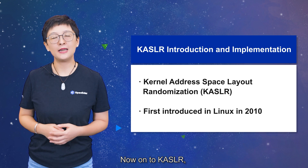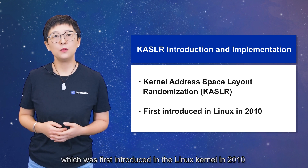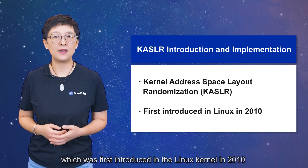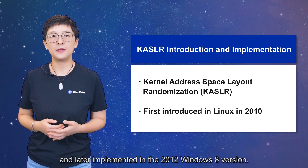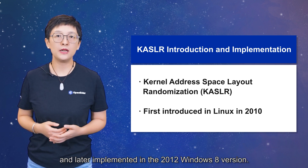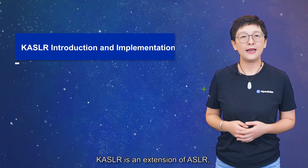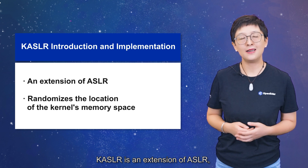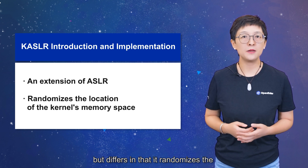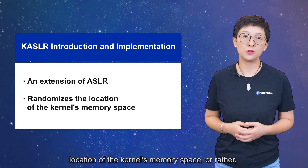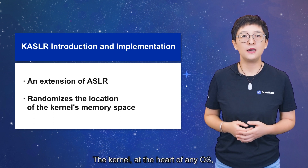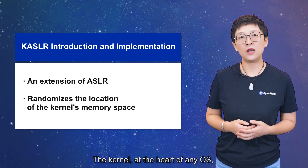Now onto KASLR, which was first introduced in the Linux kernel in 2010 and later implemented in Windows 8 in 2012. KASLR is an extension of ASLR, but differs in that it randomizes the location of the kernel's memory space — or rather, it changes the way the kernel loads itself into memory.